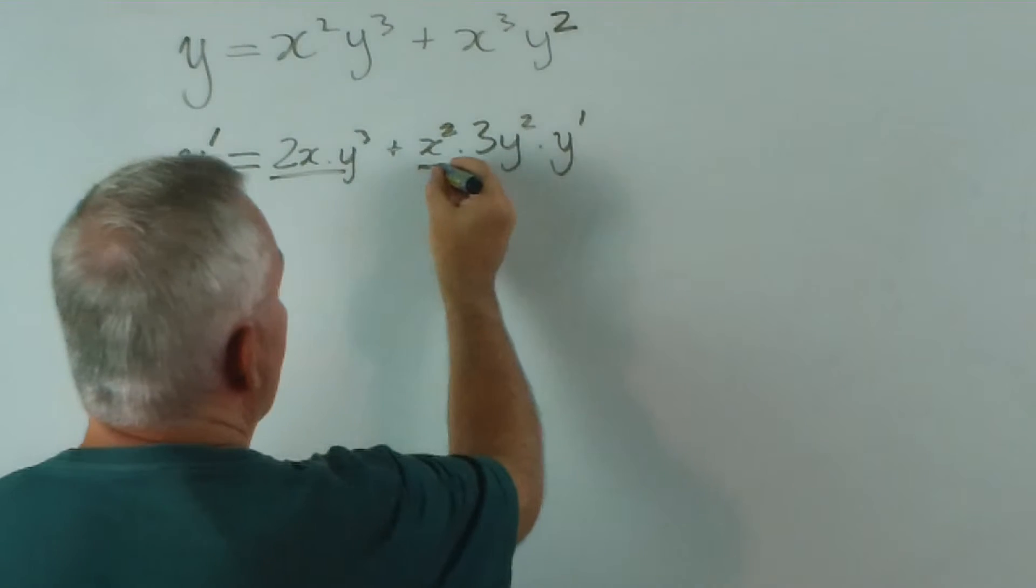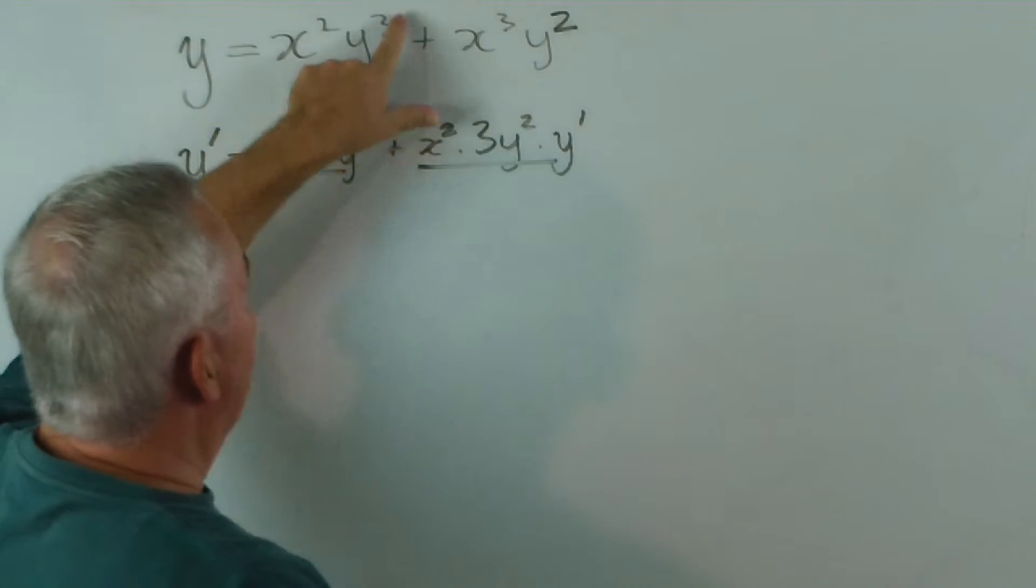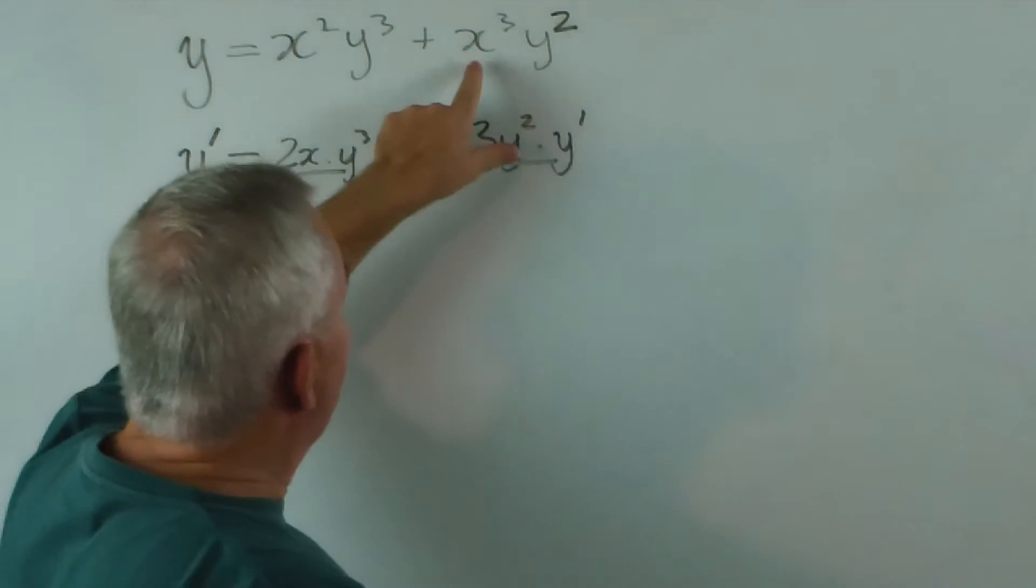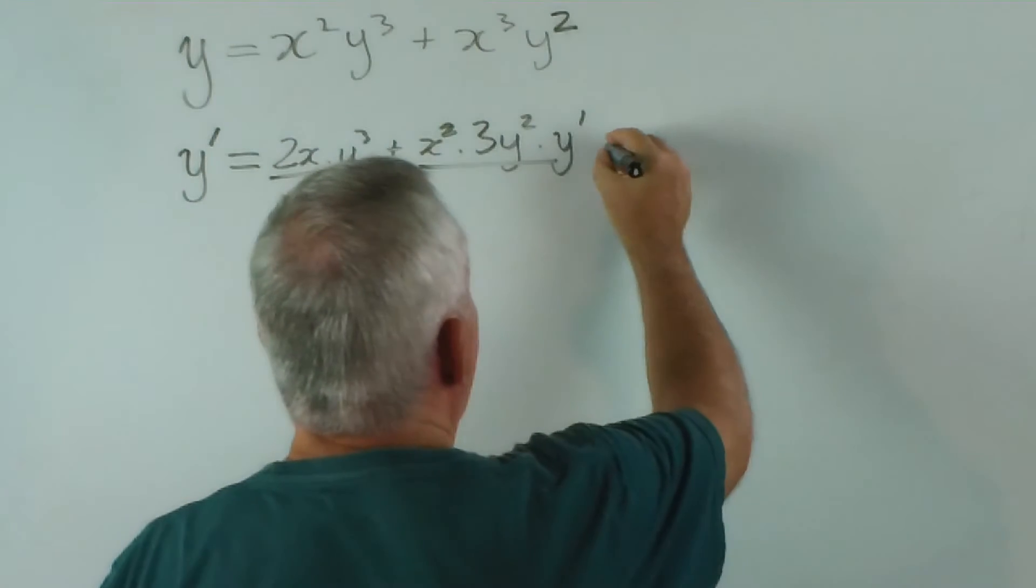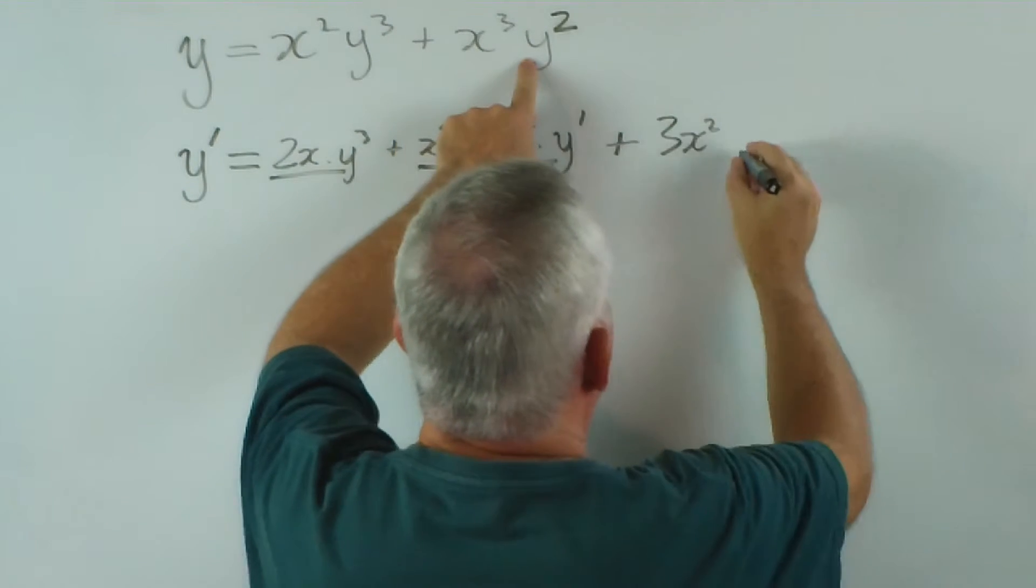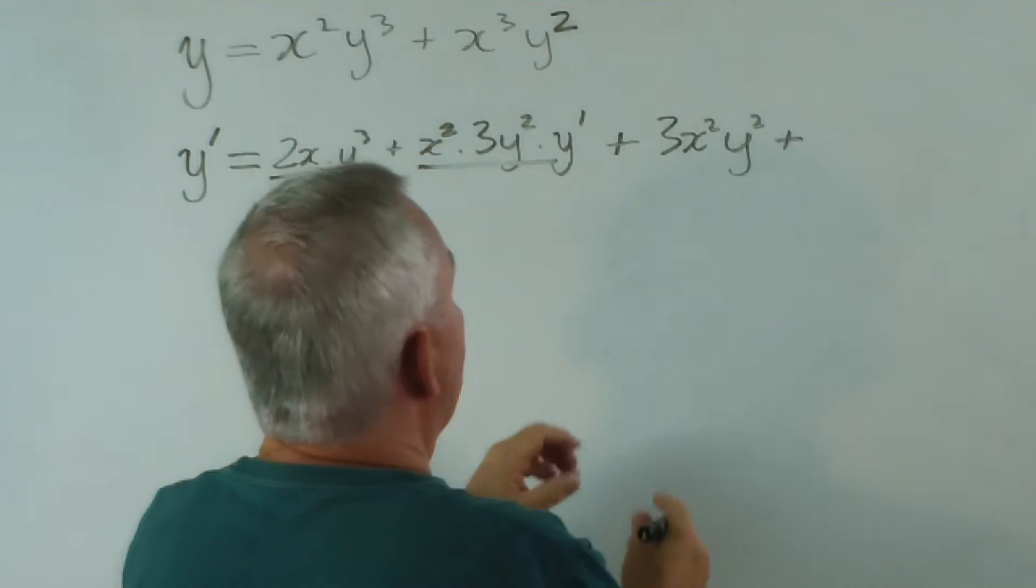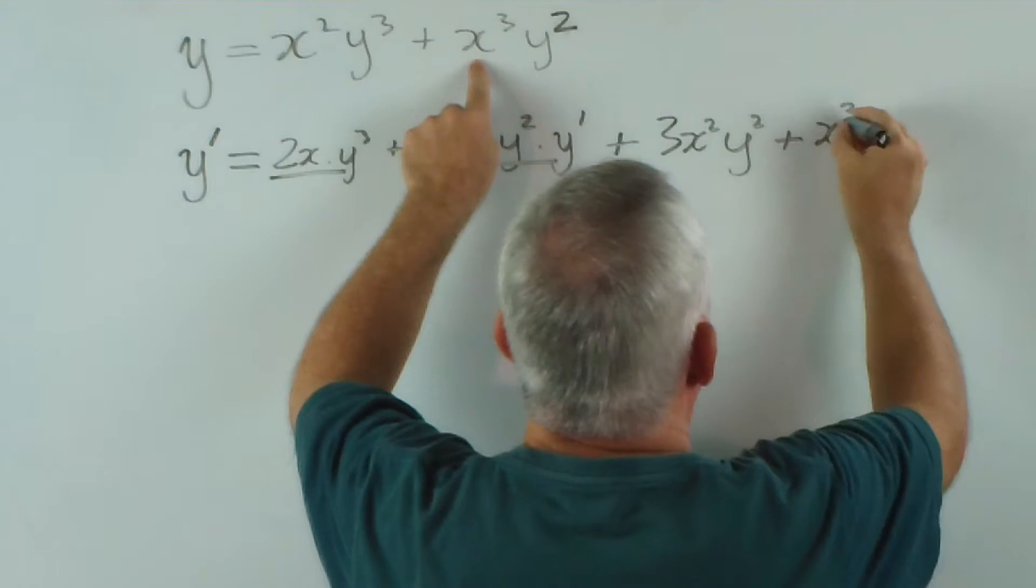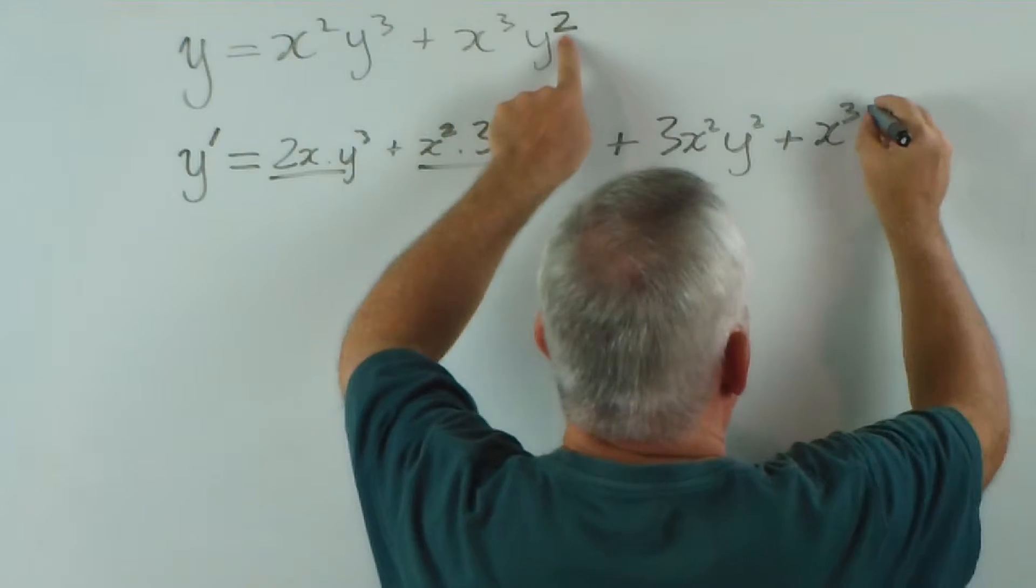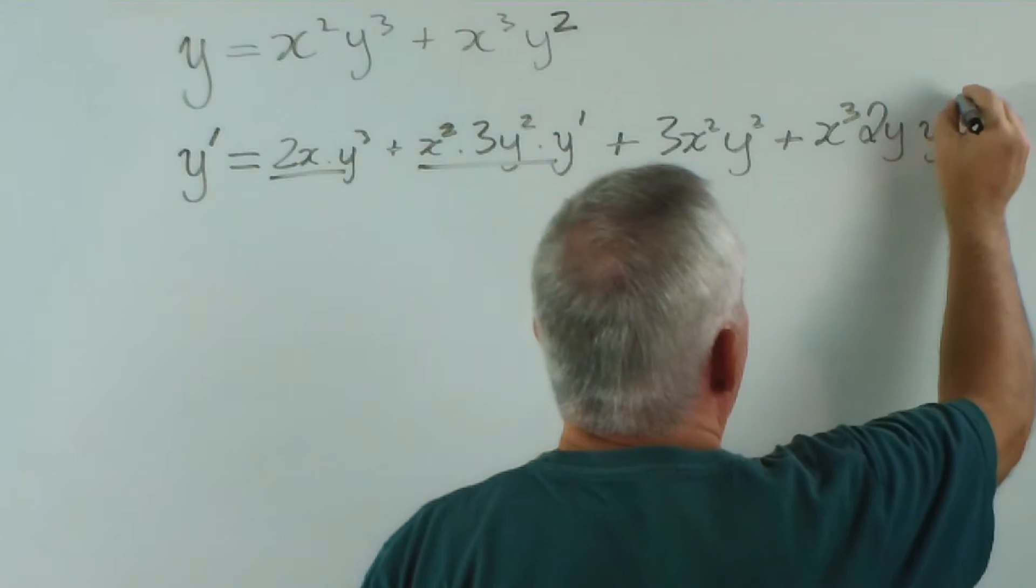There are our two expressions from the product. Notice that because the second time we're finding the derivative of an expression with y in, we end up with y dash. Now we have another product. The derivative of x cubed is 3x squared. Leave the y squared alone. That's the first of the two parts. The second part, we leave the first one alone and find the derivative of y squared. According to the power, that's going to be 2y to the power 1. And then the derivative of y is going to be y dash.